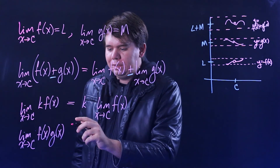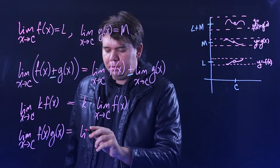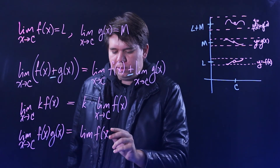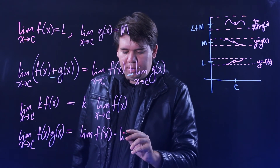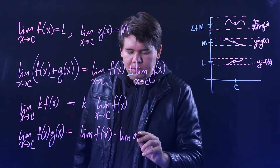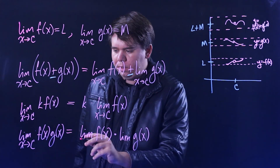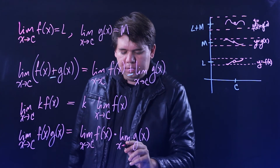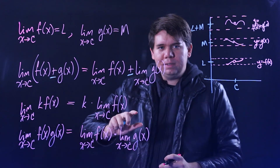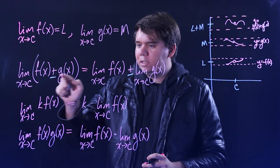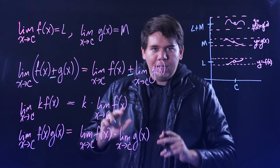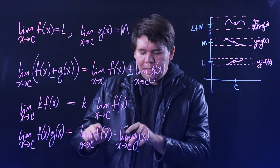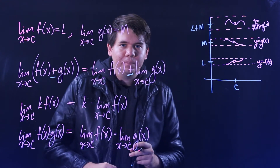So when you multiply them together, you'll get something arbitrarily close to L times M — that is, something arbitrarily close to the limit of what F was, times the limit of what G was, as X approaches C. For all of these, X is approaching the same value — it won't work if X is approaching one value in one place and a different value in another.